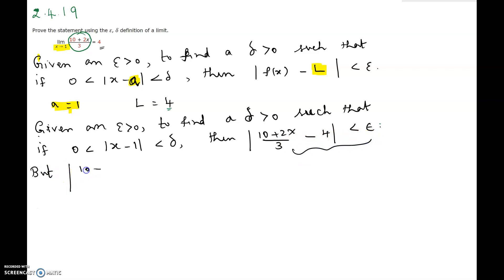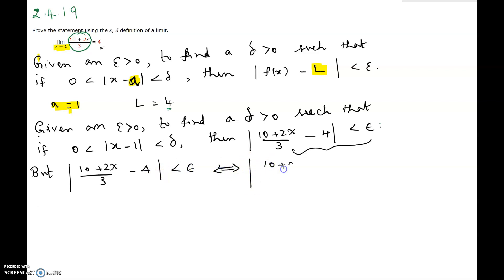|(10 + 2x)/3 - 4| < epsilon implies and is implied by |(10 + 2x - 12)| / 3 < epsilon, since 4 times 3 is 12.